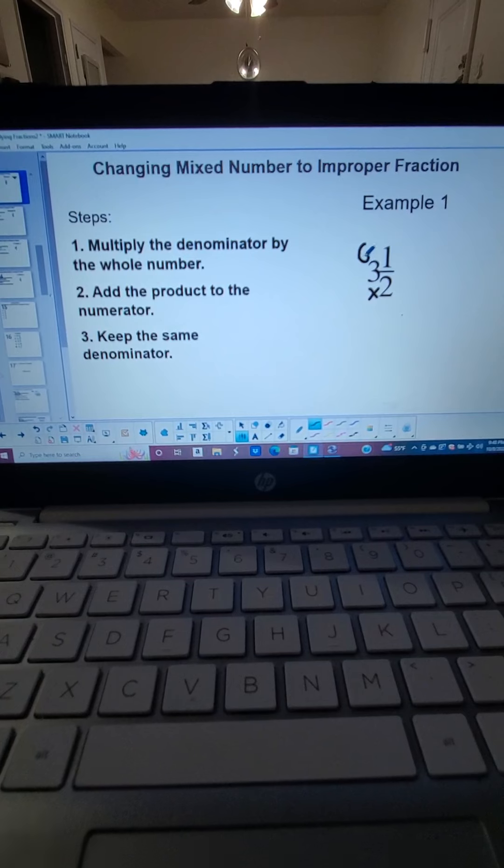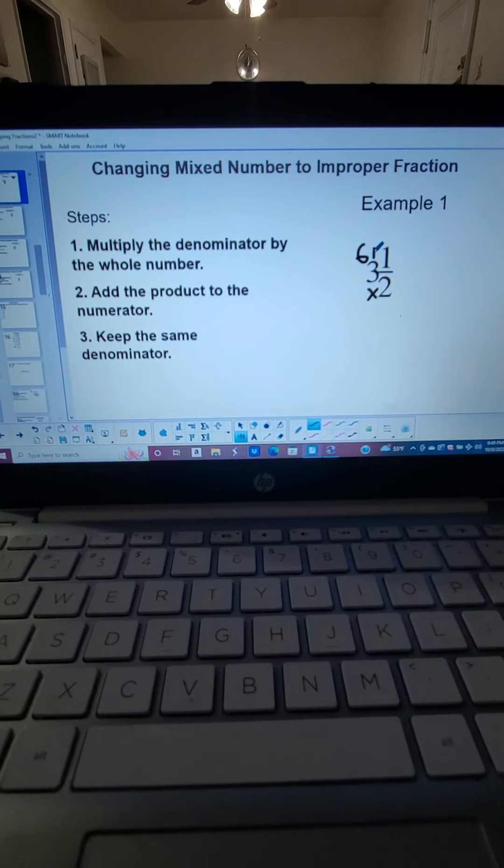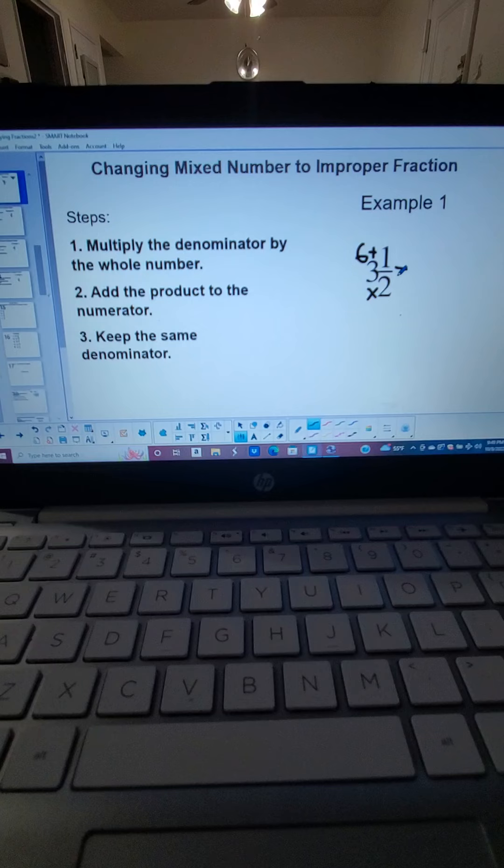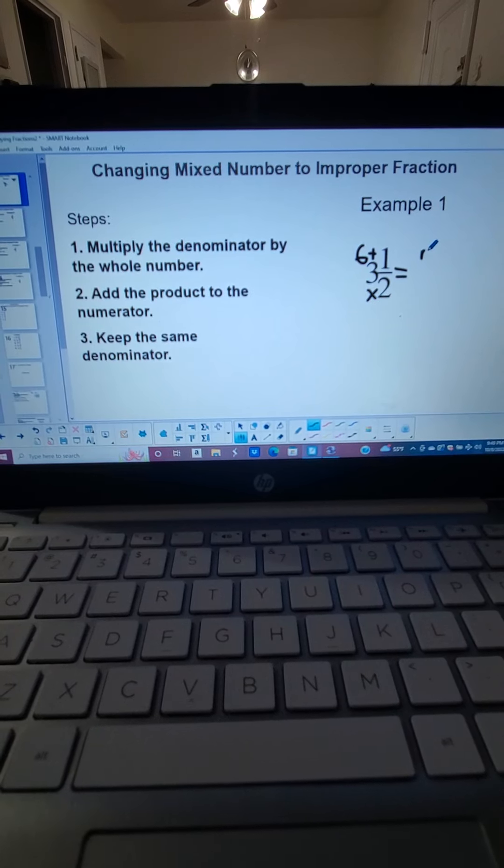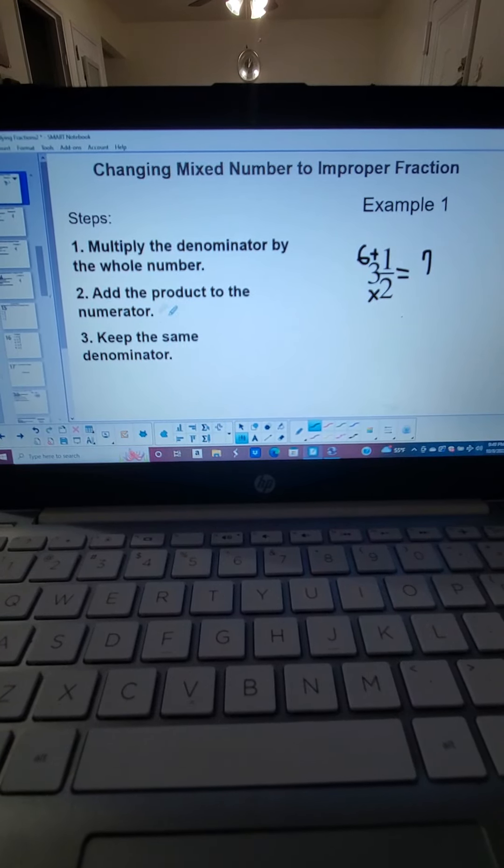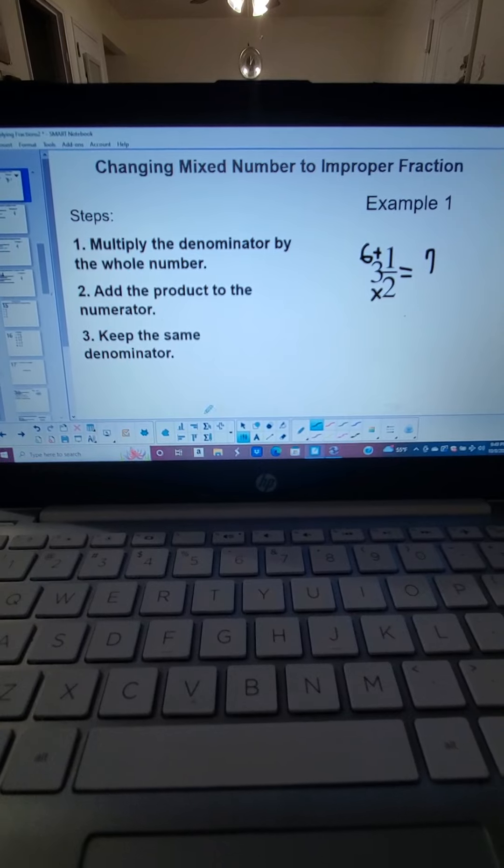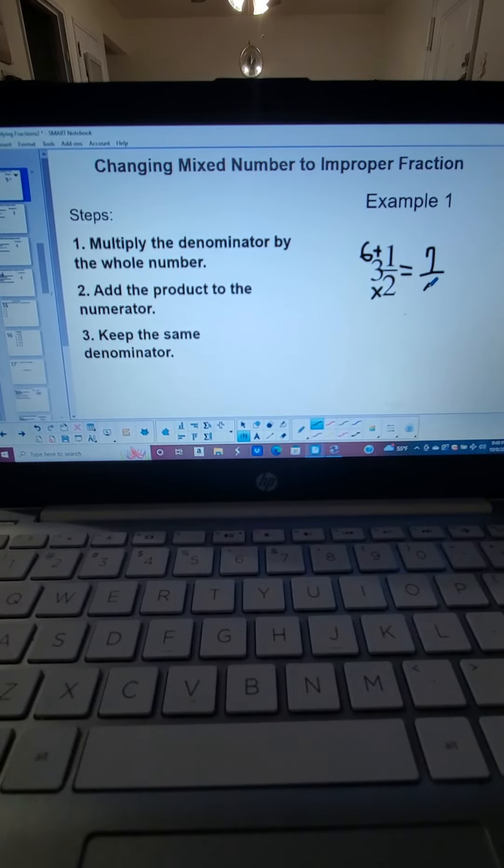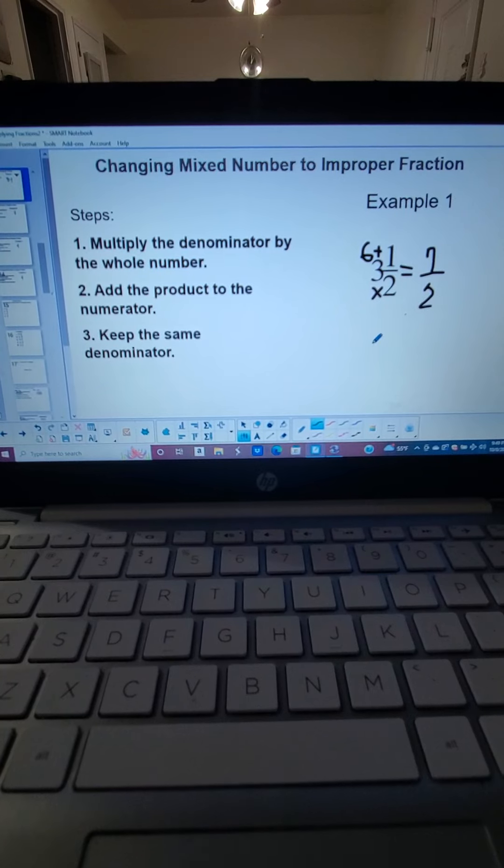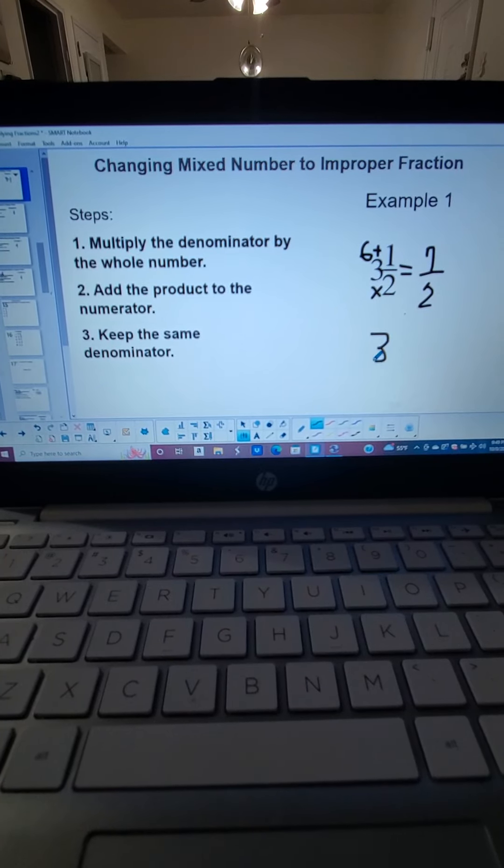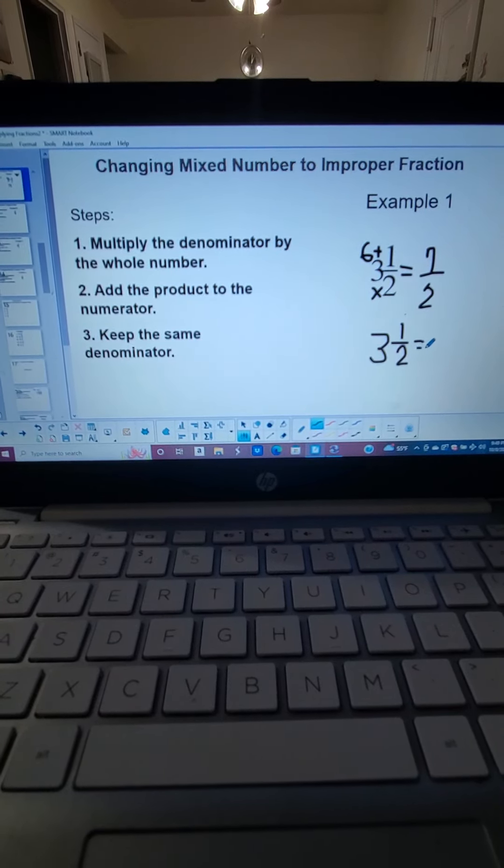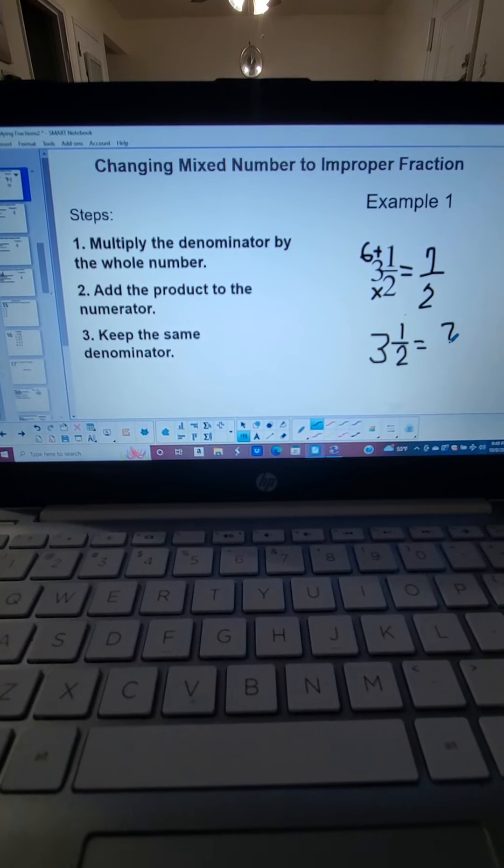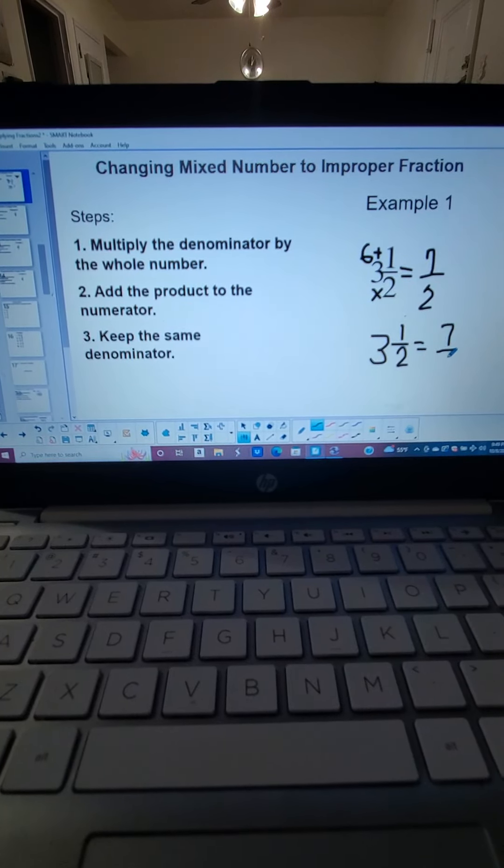So 2 times 3 is 6, plus 1 is equal to 7. And we are going to just keep the same denominator, which is 2. So 3 and 1 half is equal to 7 over 2.